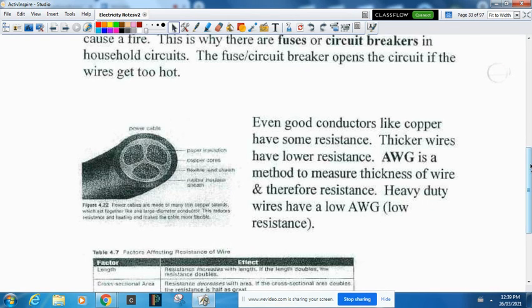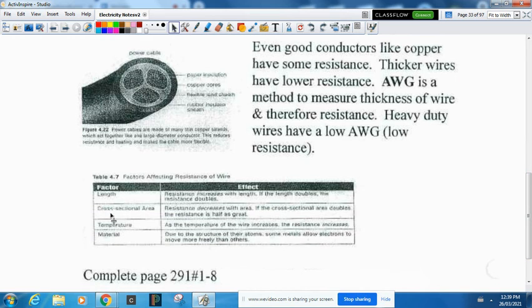Length of the wire, cross-sectional area, temperature, and material all matter. Copper has less resistance, so you'd want to make wires out of that. That is the end of outcome number two video notes.